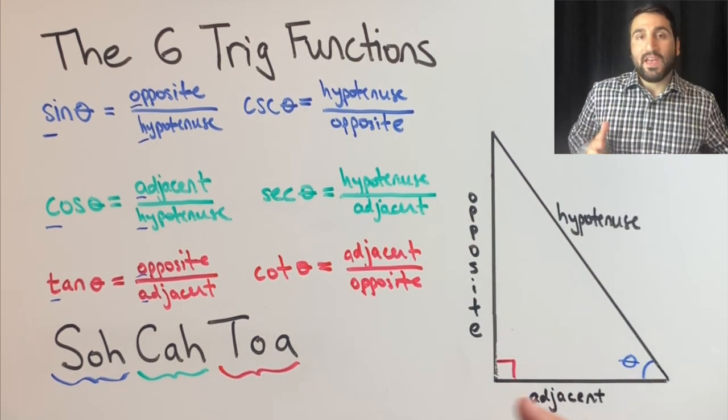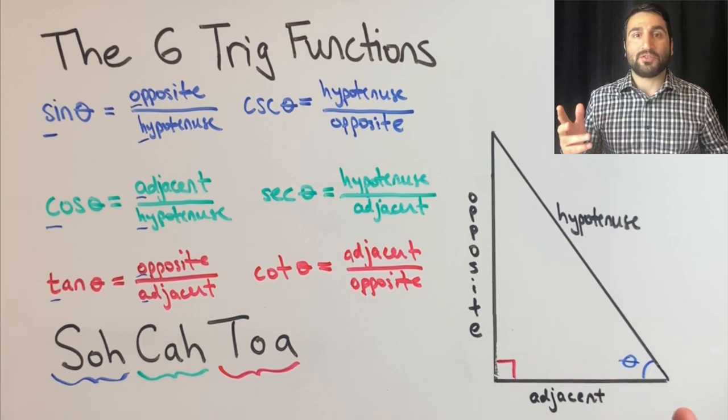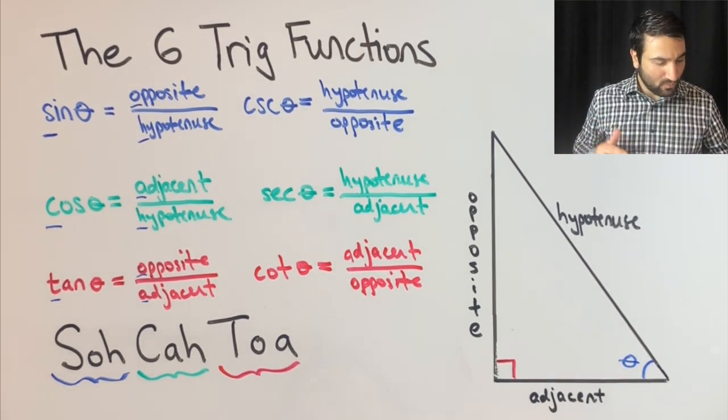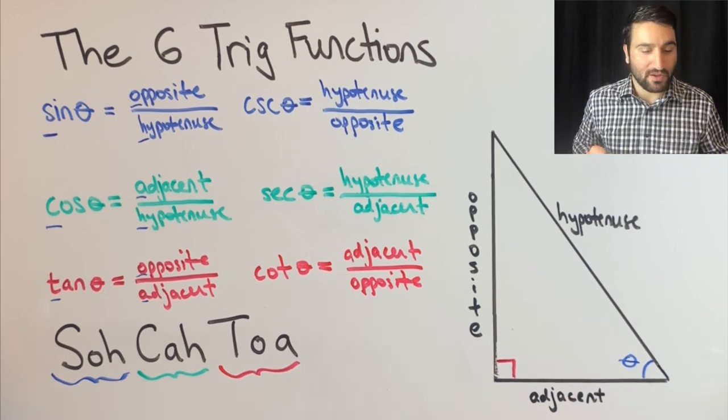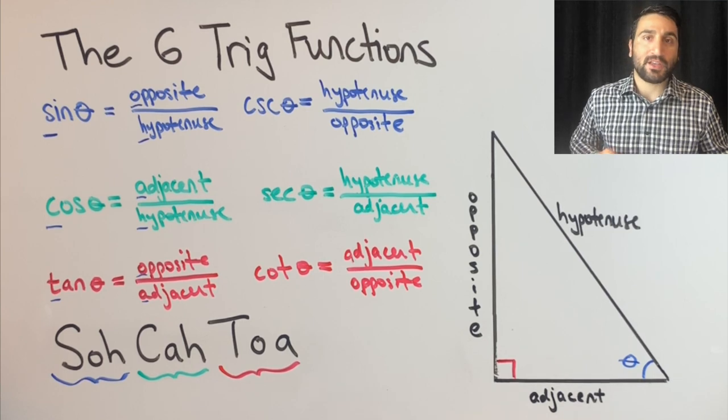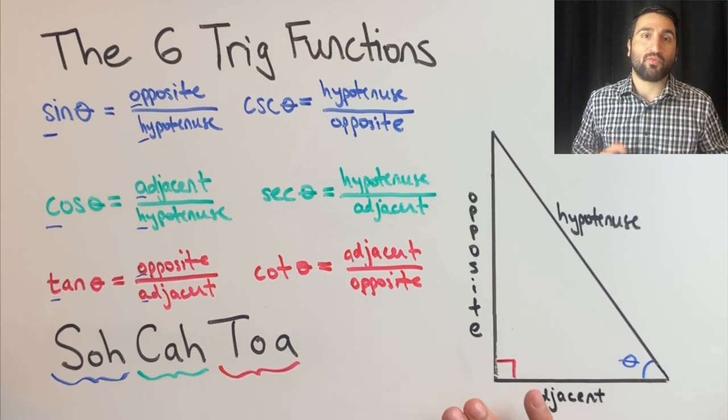You might ask, what the heck is adjacent, hypotenuse, and what am I missing? Adjacent, opposite, and hypotenuse are the three sides of a right triangle. SOH CAH TOA can only be used for a right triangle.